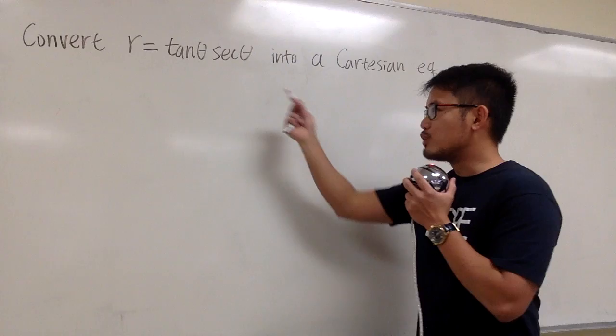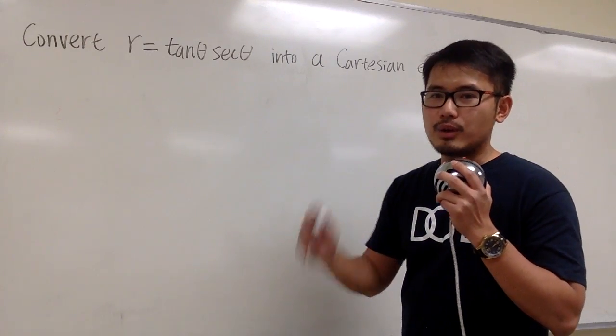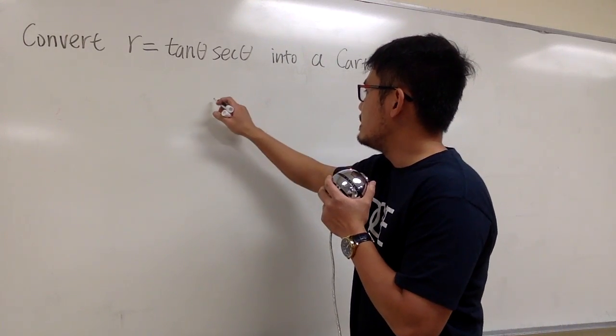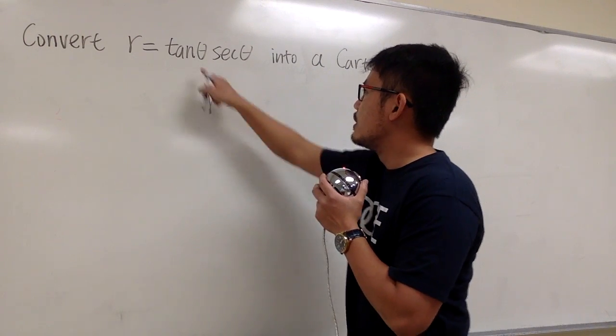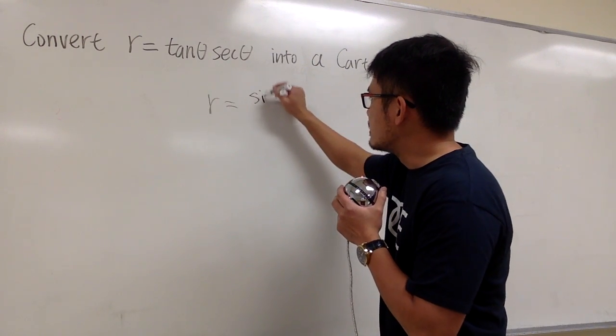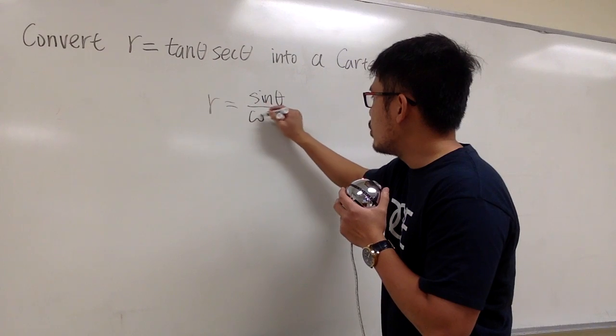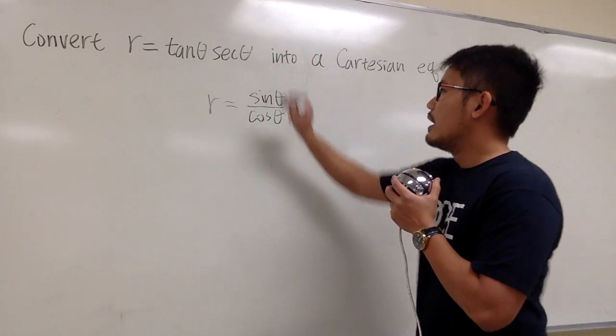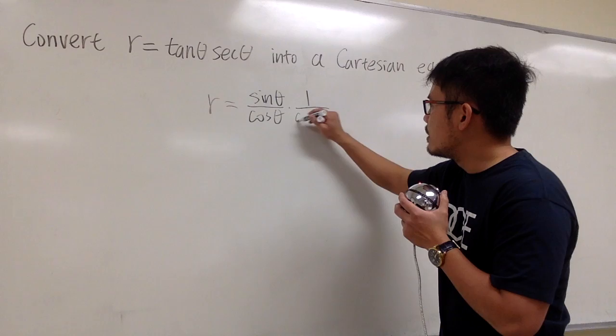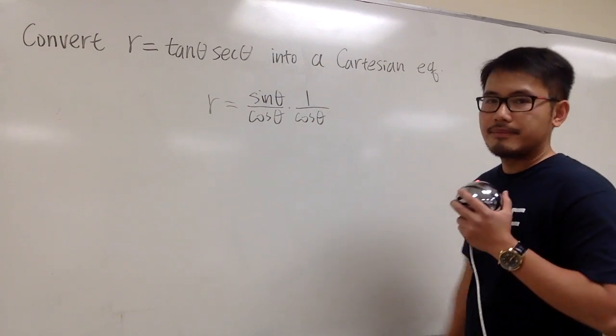So as usual, let's write this in terms of sine and cosine only. So with that being said, we can write this equation as r equals tangent theta, which is the same as sine theta over cosine theta, and secant theta is the same as 1 over cosine theta, right?